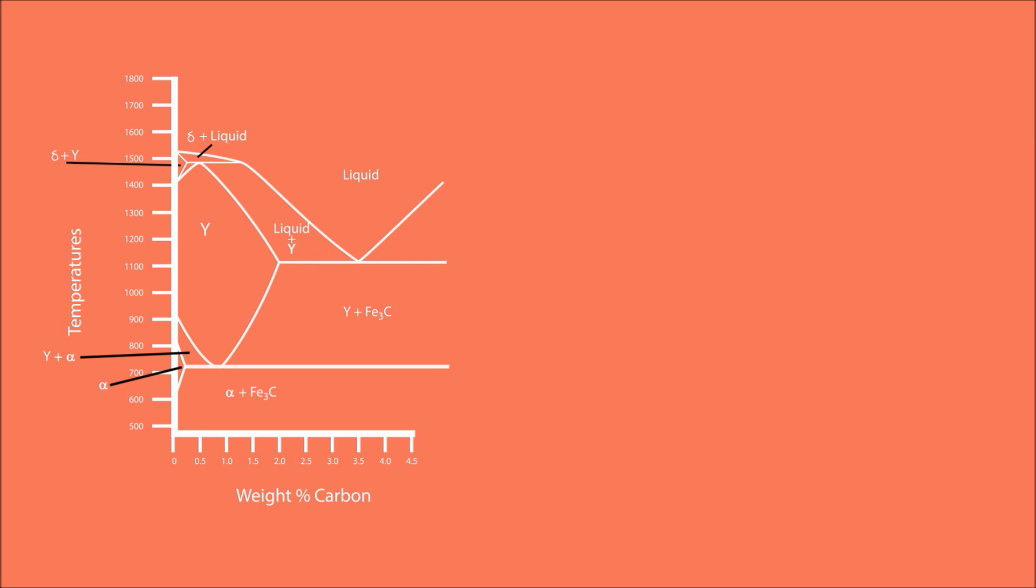If we take an example of a 0.3% carbon steel, the steel is molten until we cool to 1510 degrees Celsius. At this point, the liquid iron starts to solidify into delta iron.